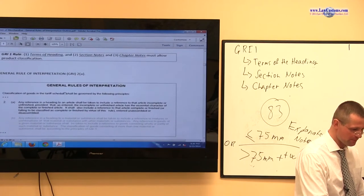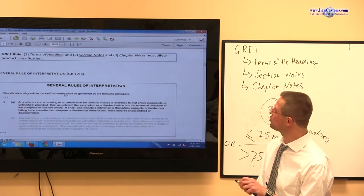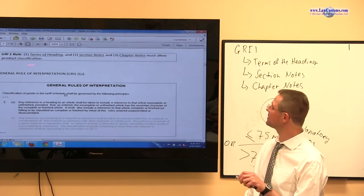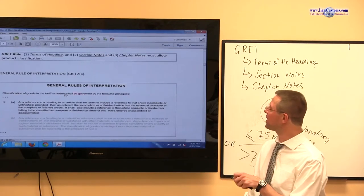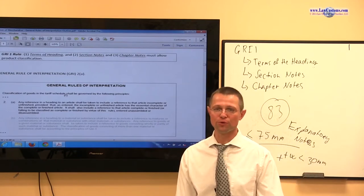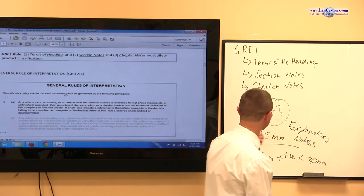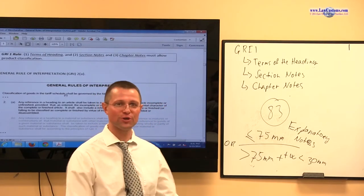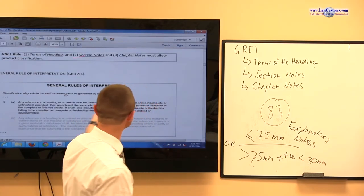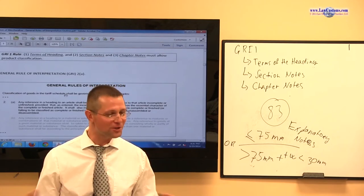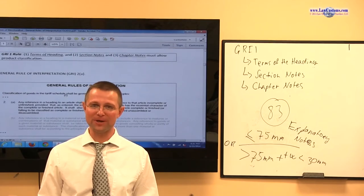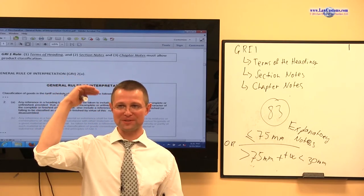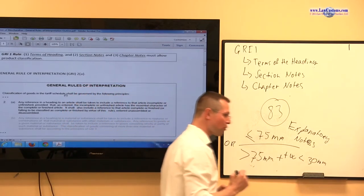So the takeaway is this. Terms of the heading, section notes and chapter notes, and three things must allow product classification. If one of them says no, you move on. Alright so that's the main takeaway from GRI 1. So that's rule number one. Most of the customs exam questions really focus on GRI 1. This is the biggest heavy hitter. So if you get away with this notion without anything else, you are doing pretty good. But pretty good is not good enough, because the bar is what, 75% right?